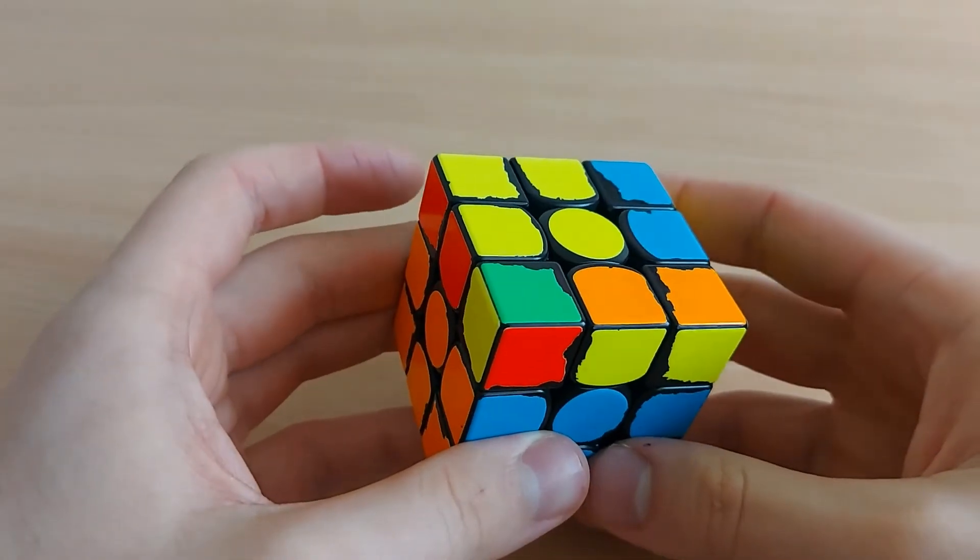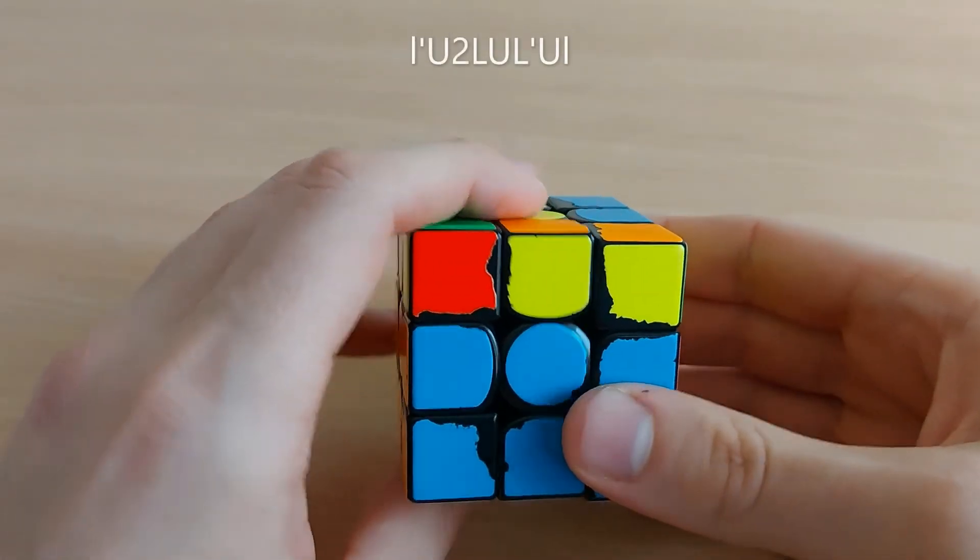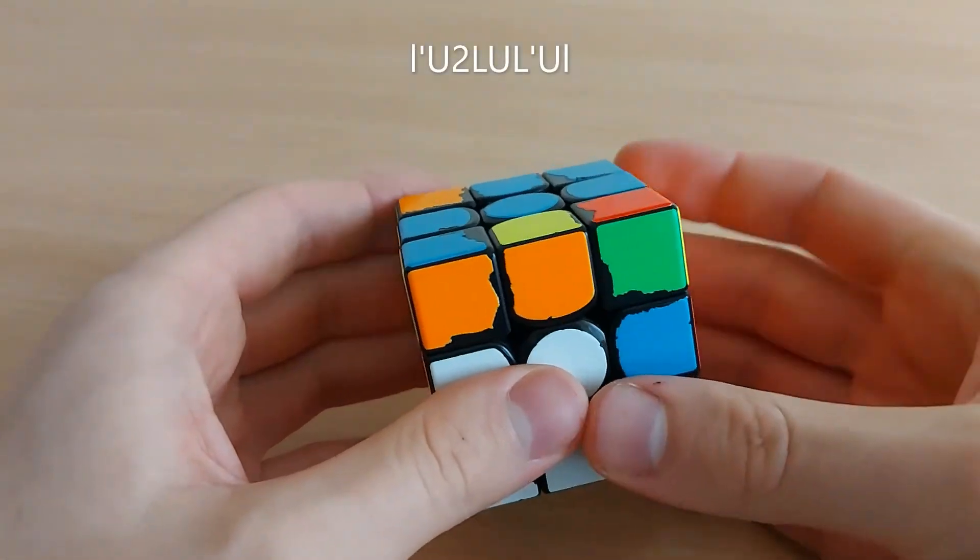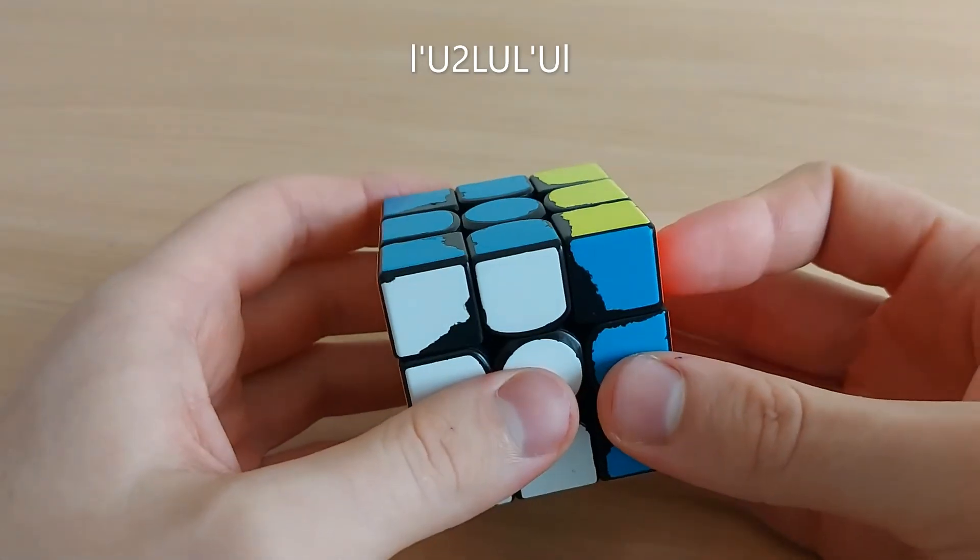The same idea goes for this one. It's only left here. So you do wide L prime U2 L U L prime U wide L.